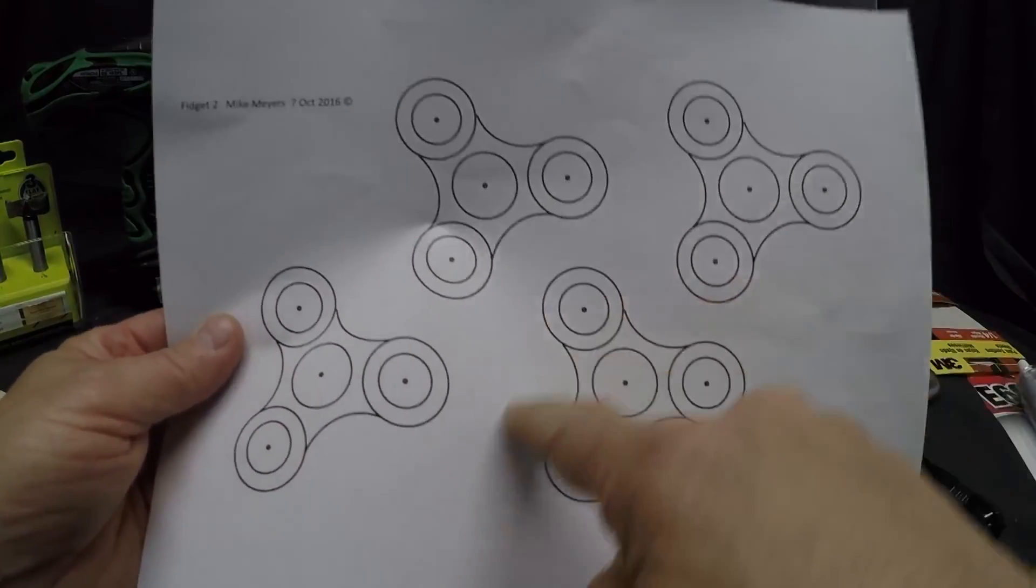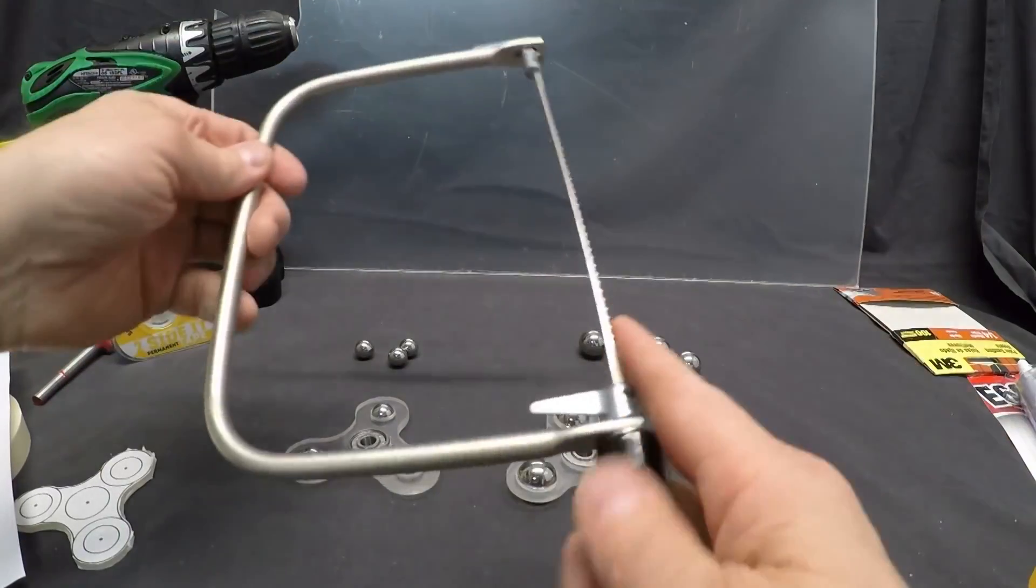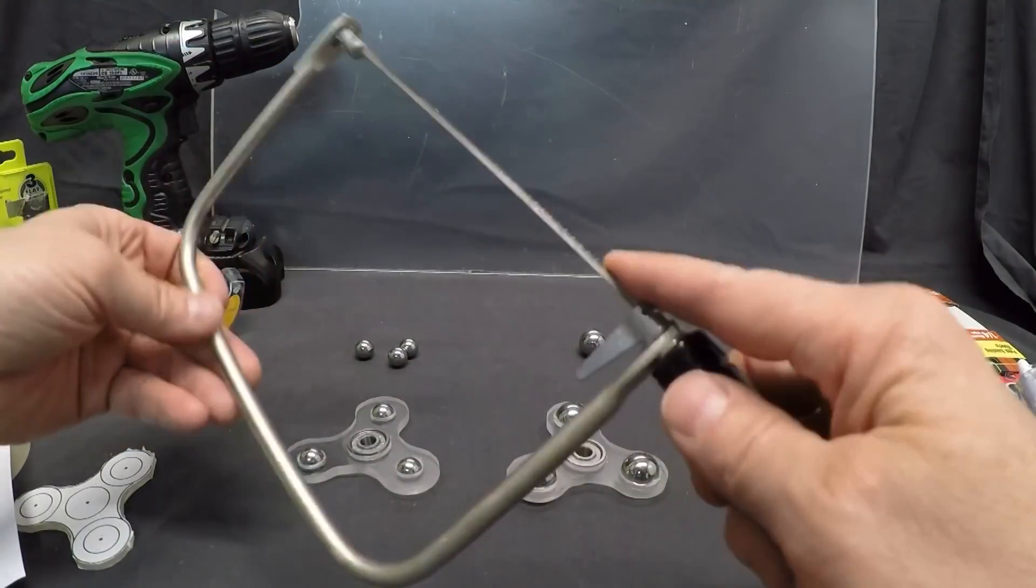When you have all the materials, take the PET plastic and trace the design. Then, cut the borders.